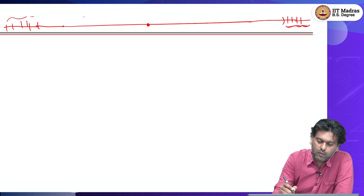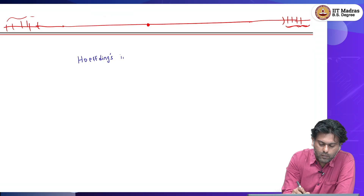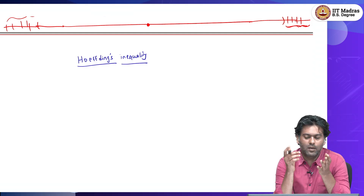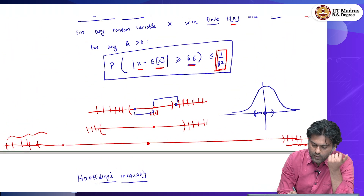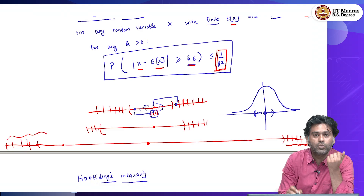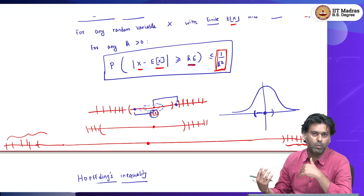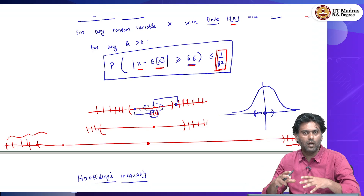The third inequality we are going to see is called Hoeffding's inequality, another very powerful concentration inequality. The word concentration is just to say — as Chebyshev illustrates very well — if this is the mean, what is the chance that things concentrate close to the mean? In other words, what is the chance that a rare event happens? These inequalities give an upper bound on the rare events, which means that most of the time things are going to concentrate around the mean.